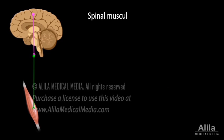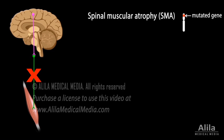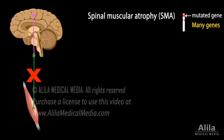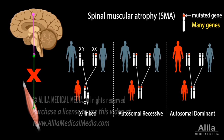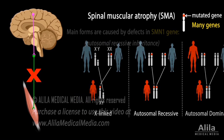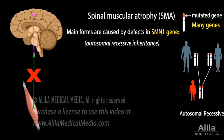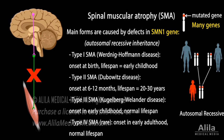Spinal muscular atrophy, SMA, is a group of genetic disorders affecting lower motor neurons. There are many different forms of SMA caused by mutations in different genes, with different modes of inheritance. The main forms are due to defects in the same gene, but differ in age of onset and severity.